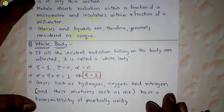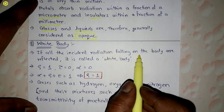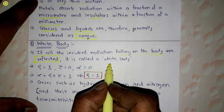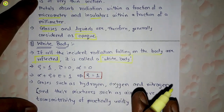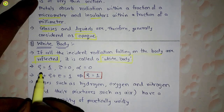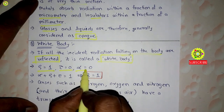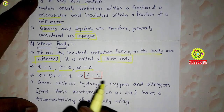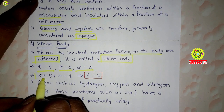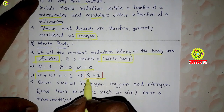A white body is one in which all the incident radiation falling on the body is reflected. For a white body: ρ = 1, τ = 0, α = 0. Putting these values into α + ρ + τ = 1, we get ρ = 1.